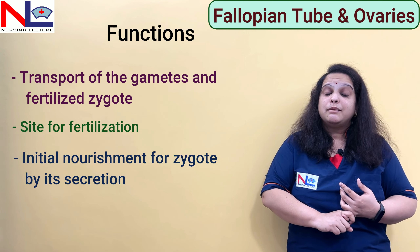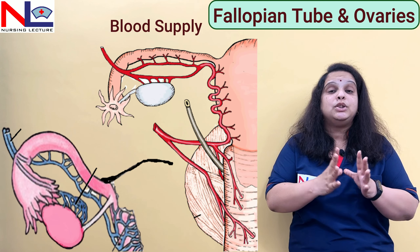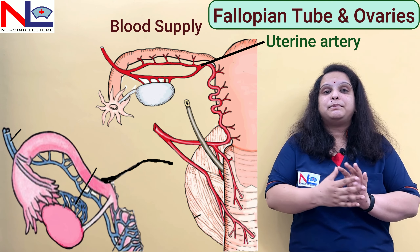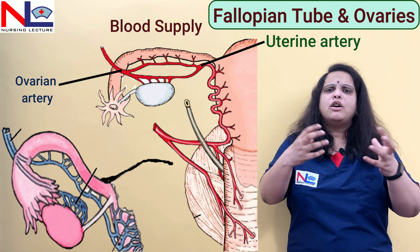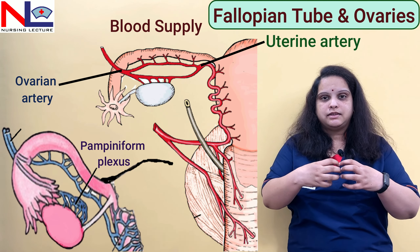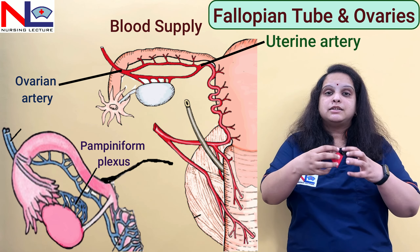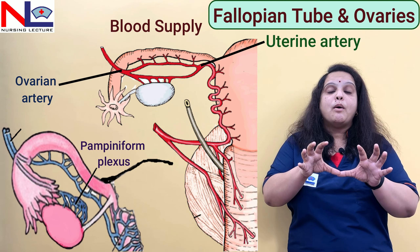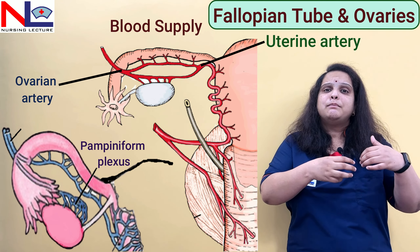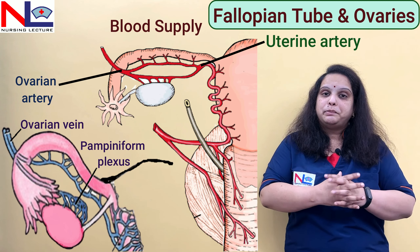Regarding blood supply: the medial two-thirds of the fallopian tube is supplied by the uterine artery, and the lateral one-third is supplied by the ovarian artery. All deoxygenated blood is drained into the venous plexuses. The plexus formed, which is common to the ovary as well, is the pampiniform plexus, which receives all deoxygenated blood and drains into the ovarian vein. This is the blood supply of the fallopian tube.